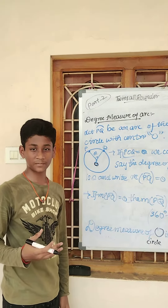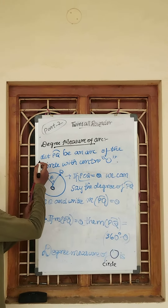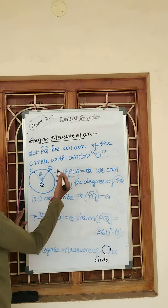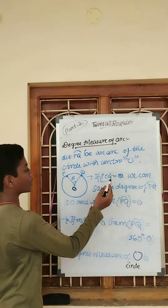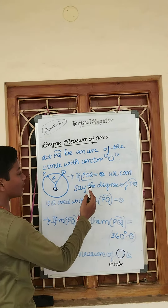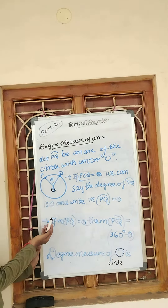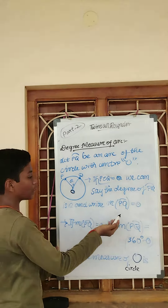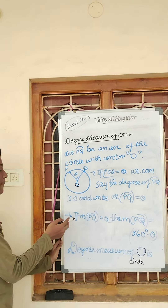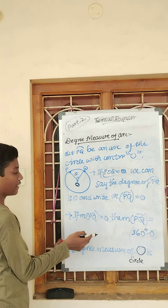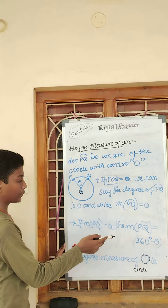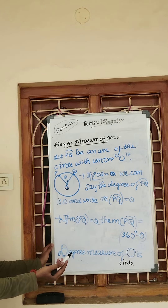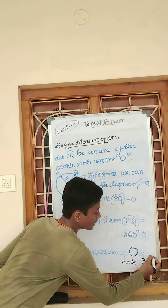What is the degree measure of an arc? Let arc PQ be an arc of the circle with center O. As you can see in this image, if angle POQ is equal to theta, we can say the degree of arc PQ is theta. We can write it as M(arc PQ) = theta. Then the major arc PQ is equal to 360 degrees minus theta. The degree measure of the full circle is always 360 degrees.